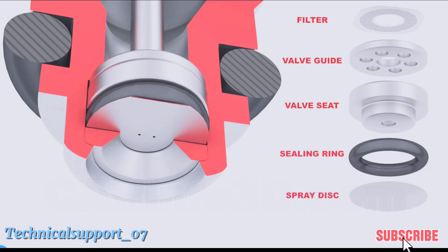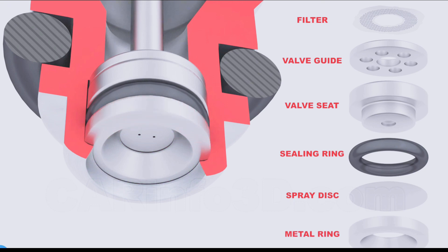The spray disc comes next. This injector is outfitted with a two-hole disc, but other options such as four or more holes are also available. All parts are held in place by a metal ring that is secured within the injector housing.